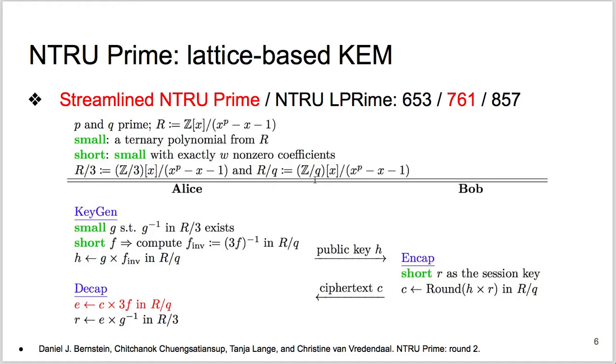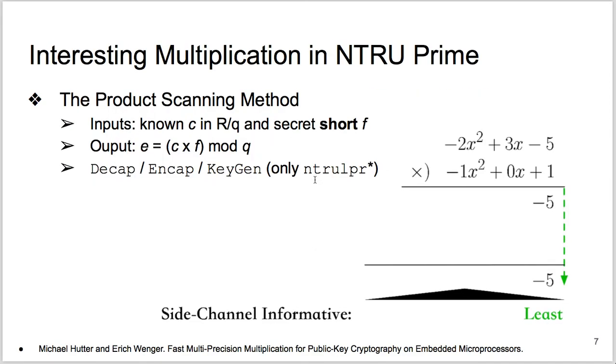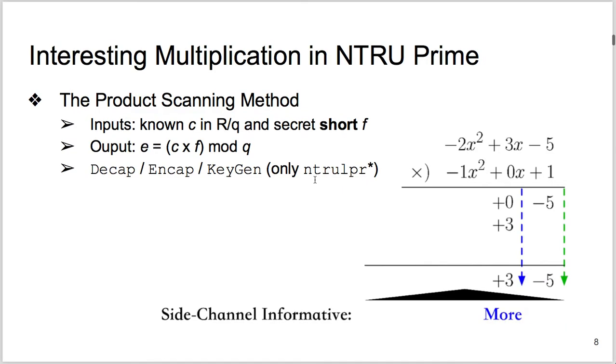Public key H and ciphertext C are two general polynomials of p coefficients from GF(q). In contrast, session key R and private key F are short, so they have only w coefficients, 1 or –1. We are interested in the multiplications between an arbitrary element and the short polynomial. The first element can be ciphertext or public key, so we know it. The second input can be session key or private key, so we want it. The target implementation here uses product scanning to fulfill its multiplications, so the store operations to the output array are minimized as we compute one output coefficient at a time. It is clear in this diagram that the most side-channel informative part is the calculation of the middle output coefficient. Such multiplications in NTRU Prime appear not only in decapsulation, but also in encapsulation and the key generation of NTRU LPrime.